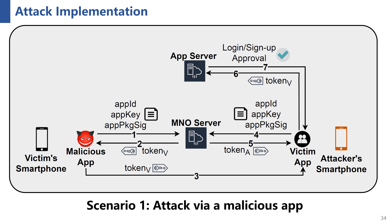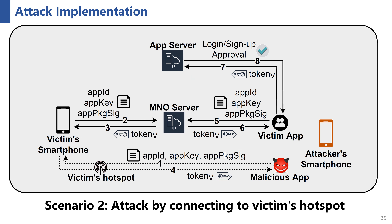Let's see the implementation details of the simulation attack. The attack can be implemented under two scenarios. In the first scenario, the attack is performed via a malicious app, as described. In the second scenario, the attack is performed by connecting to the victim's hotspot. The attacker connects his own smartphone to the mobile hotspot of the victim's smartphone and sends app-specific data to the MNO server through the victim's cellular network. The attacker then follows the same subsequent steps as in the malicious app scenario, and successfully bypasses the authentication scheme.